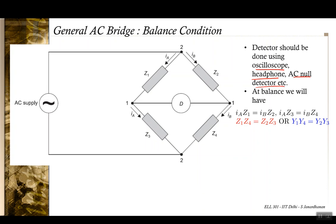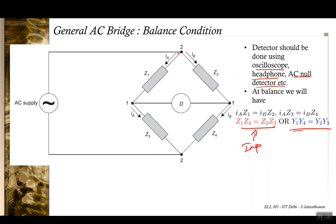Similar to a DC bridge, you need a particular relationship between impedances Z1, Z2, Z3, and Z4 for the balance condition. You need iA·Z1 = iB·Z2 and iA·Z3 = iB·Z4, from which Z1·Z4 = Z2·Z3 in terms of impedances, or Y1·Y4 = Y2·Y3 in terms of admittances.